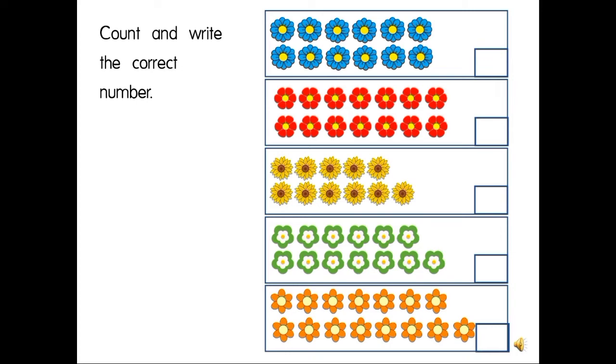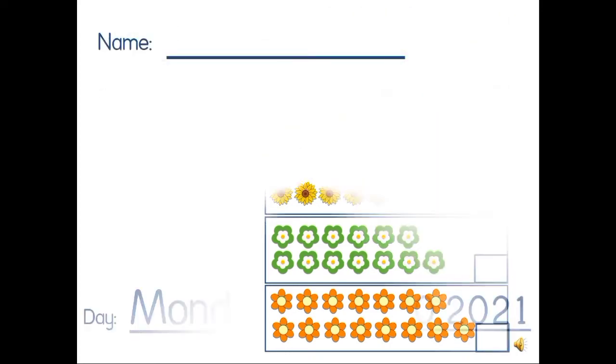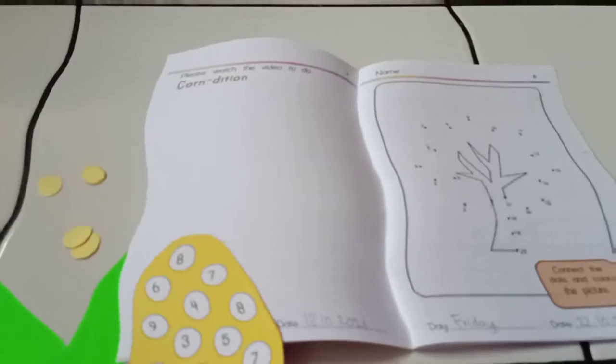Before doing page 4, please write down the day and the date carefully. Today is Monday, the 18th of October, 2021. It is Monday, 18.10.2021. Now please prepare the corn and its leaf picture, and also small yellow circles that we sent last time.